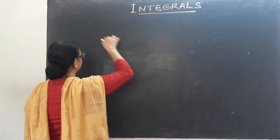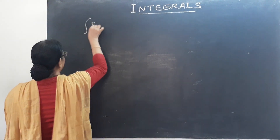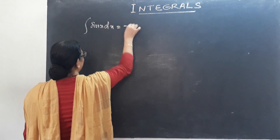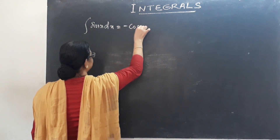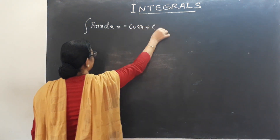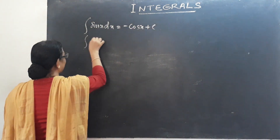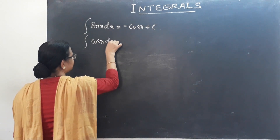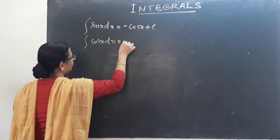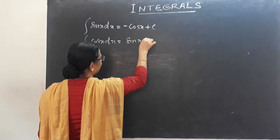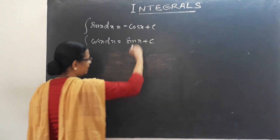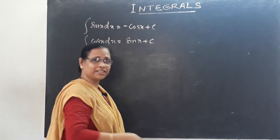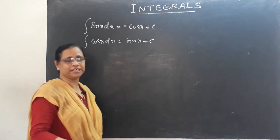We have learned basic formulas in the first method. For example, the integral of sin(x) dx equals minus cos(x) plus c, and the integral of cos(x) dx equals sin(x) plus c. We have found these 18 formulas in the first method.